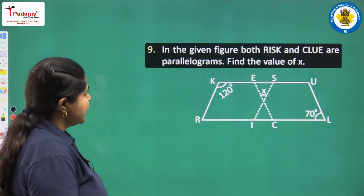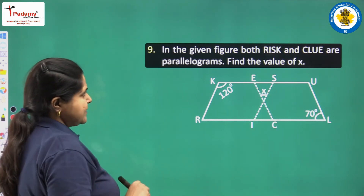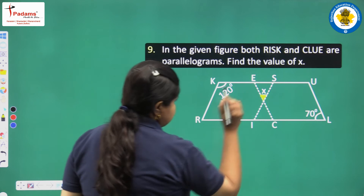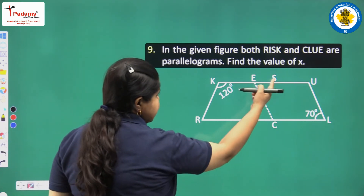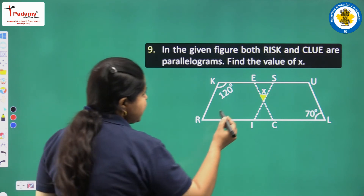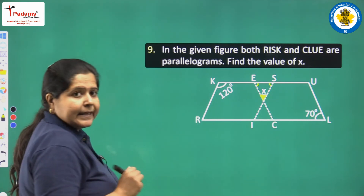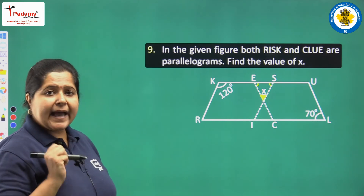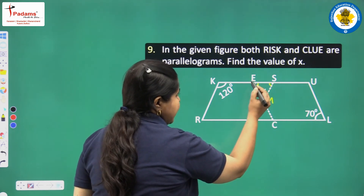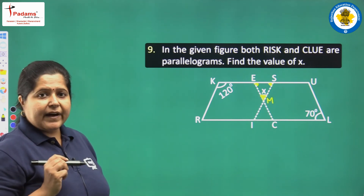Next, in the given figure, both RISK and CLUE are parallelograms. Find the value of x. To find x, we focus on two angles — angle CEU and angle ISK. By applying the angle sum property of triangle in the small triangle ESM, if we find these two angles at E and S, we can easily find x.